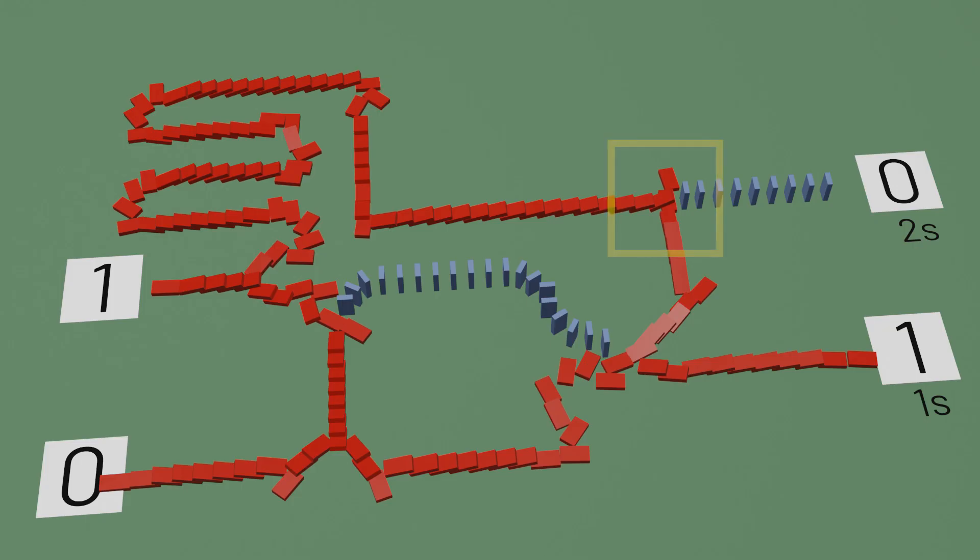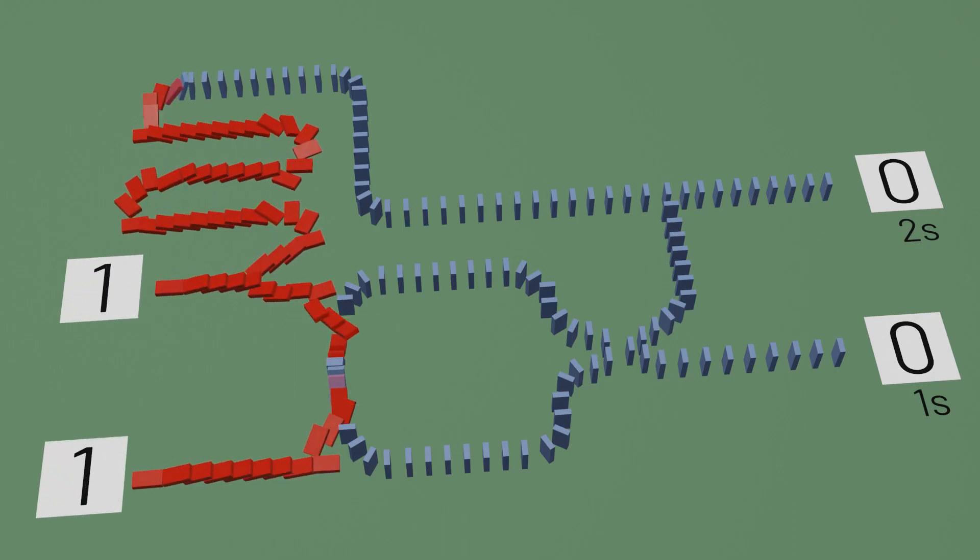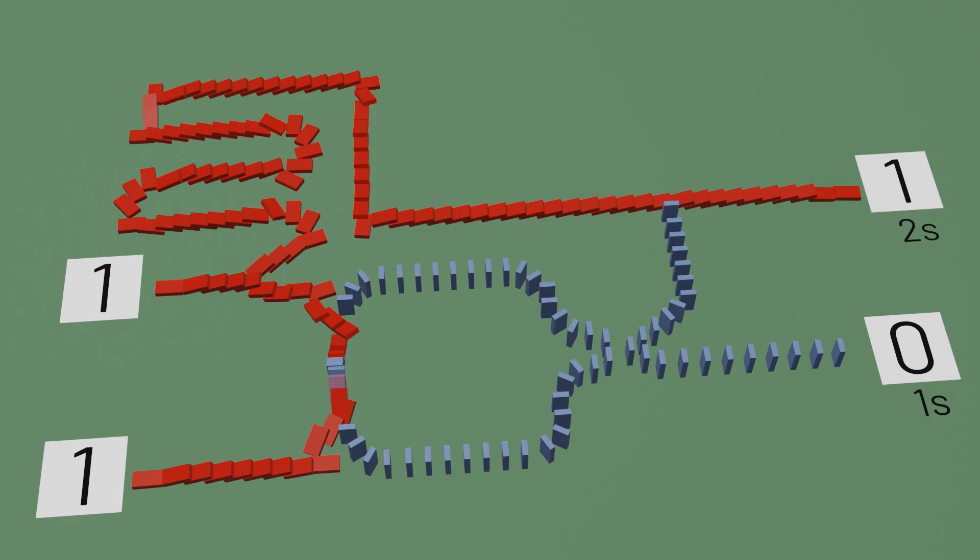And if both inputs are pushed, then they cancel out in the exclusive OR gate to prevent the ones place from producing a one, and nothing interrupts the pathway for the twos place to produce a one instead.